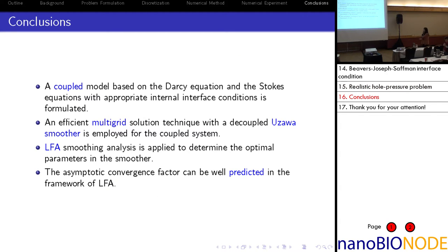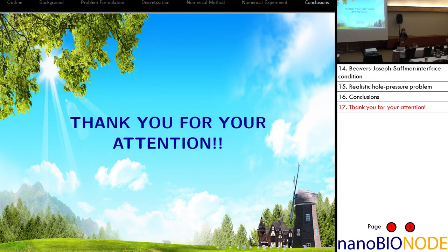In conclusion, we formulate the coupled model and solve it using the multigrid method together with a Vanka-type smoother. Local Fourier analysis helps us determine the relaxation parameter in our smoother and predict the asymptotic convergence factor. Our method is confirmed by the numerical tests. Thank you.